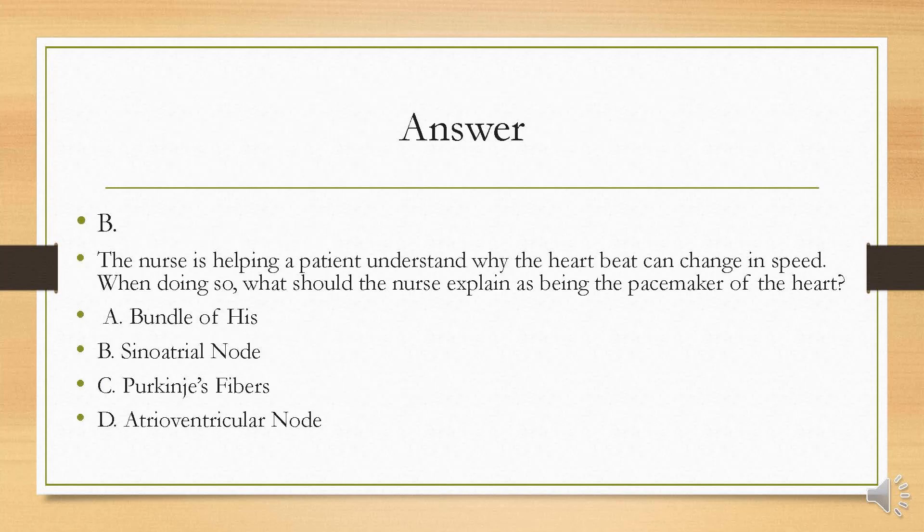Your answer is B. It's important to remember that the sinoatrial node, or SA node, is the primary pacemaker of the heart and the location where your electrical impulse begins. Remember from your anatomy and physiology that the normal heart rate is 60 to 100, which means your SA node will also be firing at a rate of 60 to 100 in adults.